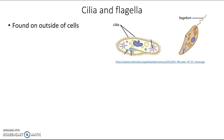Cilia and flagella are structures found on the outsides of cells. If you look at these diagrams, we've got cilia around the outside of this cell and a flagellum sticking off the outside of this cell.